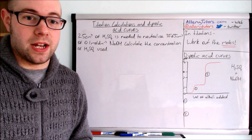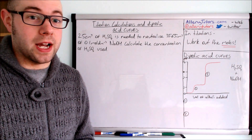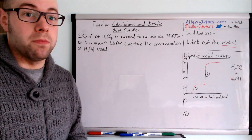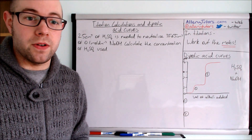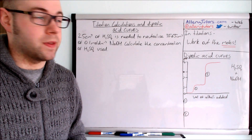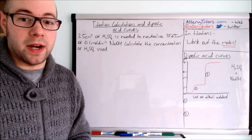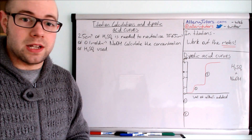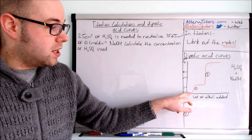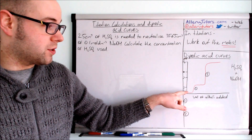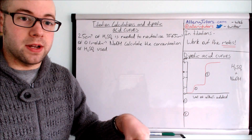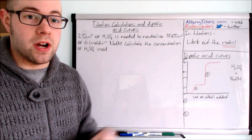We're going to look at this type of curve here — this is a diprotic acid curve. Diprotic means an acid that gives up two protons per one mole of molecules. For example, sulfuric acid has two protons attached to it and can dissociate both of them. When we react that with sodium hydroxide, we get this classic diprotic curve. In our conical flask we have sulfuric acid, starting at a pH of about one, and then we're adding sodium hydroxide to it. You can see this double kind of rise here.